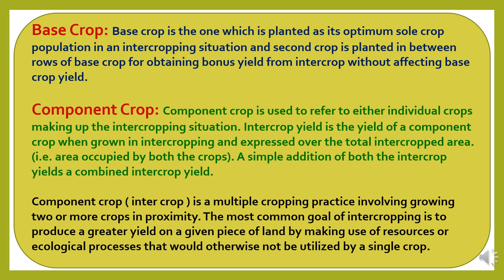In intercropping there are two crops: the base crop and the component crop. The base crop is the one which is planted at its optimum sole crop population in an intercropping situation. The second crop is planted in between the rows of the base crop for obtaining bonus yield from the intercrop without affecting the base crop yield. The component crop refers to either individual crops making up the intercropping situation. Intercrop yield is the yield of a component crop when grown in intercropping, expressed over the total intercropped area.